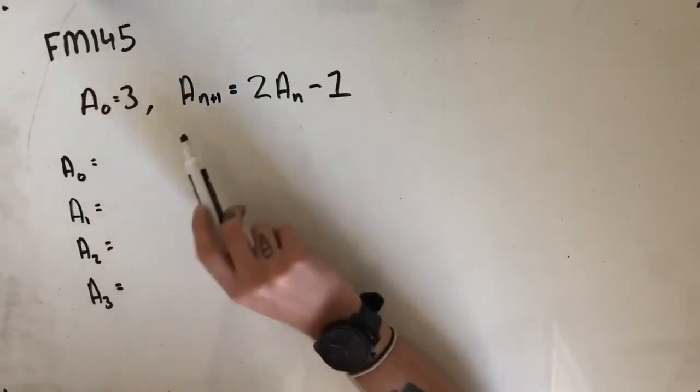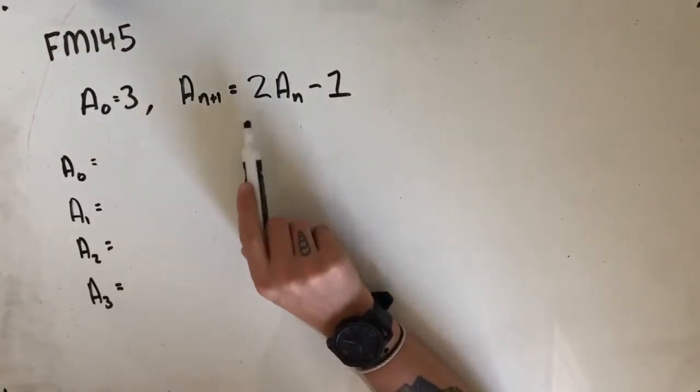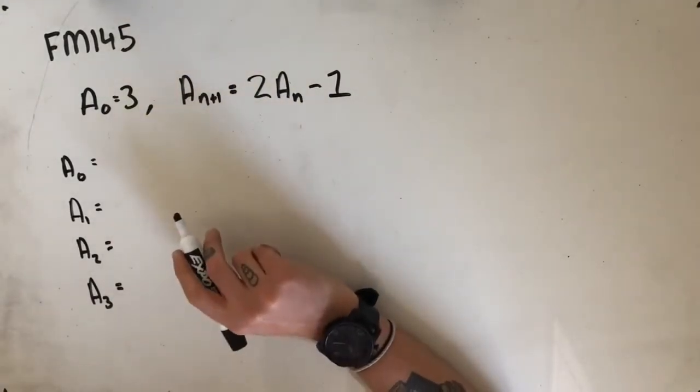a₀ is equal to 3, aₙ₊₁ equals 2aₙ minus 1. So the first four terms of this recurrence relation are...